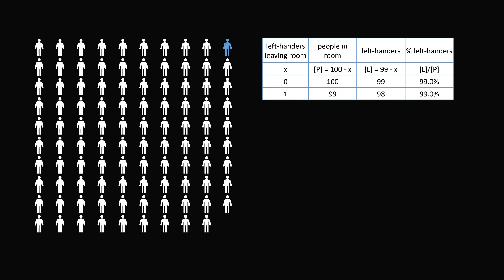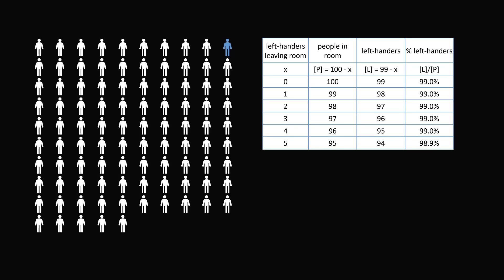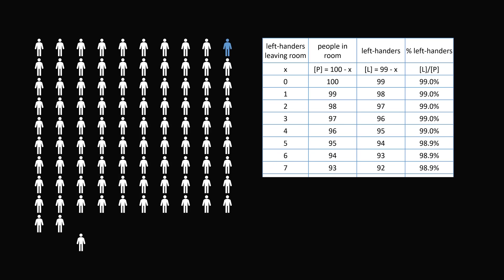So let's see what happens when one person leaves the room. We have one fewer person in the room, which is 99, and we have one fewer left-hander. So this will almost be 99% still. We can do this calculation when another person leaves. We will have 98 people in the room, 97 left-handers, and we're still at about 99%. We'll do this calculation for three people leaving the room, four people, and we can continue doing this calculation. We're still going to be very close to 99% for quite a while.